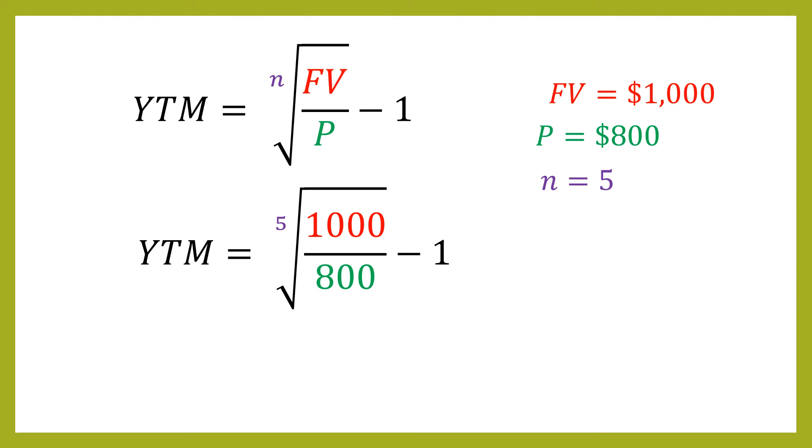You would then enter this into your calculator, being very careful to ensure that the minus one is outside the square root. Otherwise, you will get problems. When you put this into your calculator, it will give you what looks like a very small number. This is a decimal answer. So you need to multiply it by 100 to get it as a percentage. And that says that the yield to maturity is 4.56% when we round it.